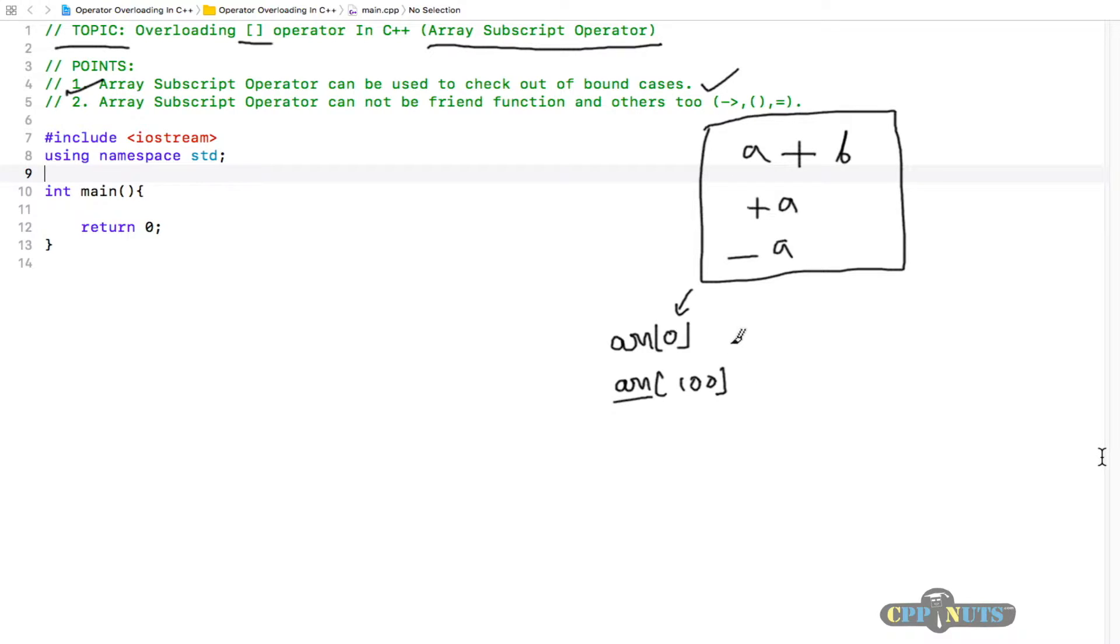You can give the error at this time. Otherwise, it is not possible in C and C++ programming. The second thing is array subscript operator cannot be a friend function, and others too.